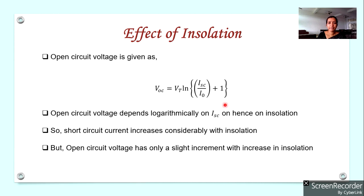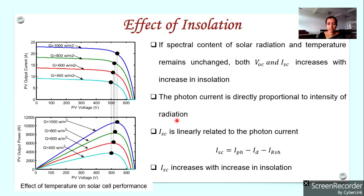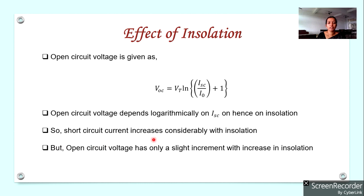The open circuit voltage is logarithmically related to short circuit current. So when short circuit current increases due to increase in irradiance, the open circuit voltage only increases logarithmically — there is only a slight increase in the open circuit voltage when irradiance increases.